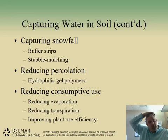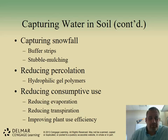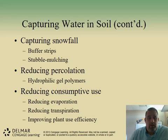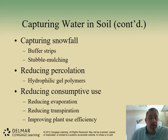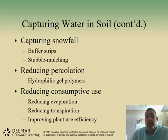Something very important here in California is capturing snowfall. In Southern California we don't receive a lot of rain, but approximately two-thirds of all rainfall in California comes as snow during the wintertime. We want to capture that snowfall and allow it to flow into our reservoirs so that snow can be used later.